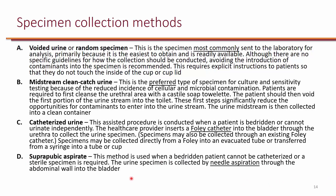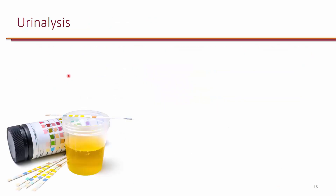There's also suprapubic aspirate, where a needle is used to go directly into the bladder and pull urine out. It's not as commonly used, but occasionally if there's obstruction and the patient is unable to urinate, yet the kidneys are working and producing urine, we can go directly into the bladder to draw the urine out. This is done either to relieve the urine or to send a sample to the microbiology lab.